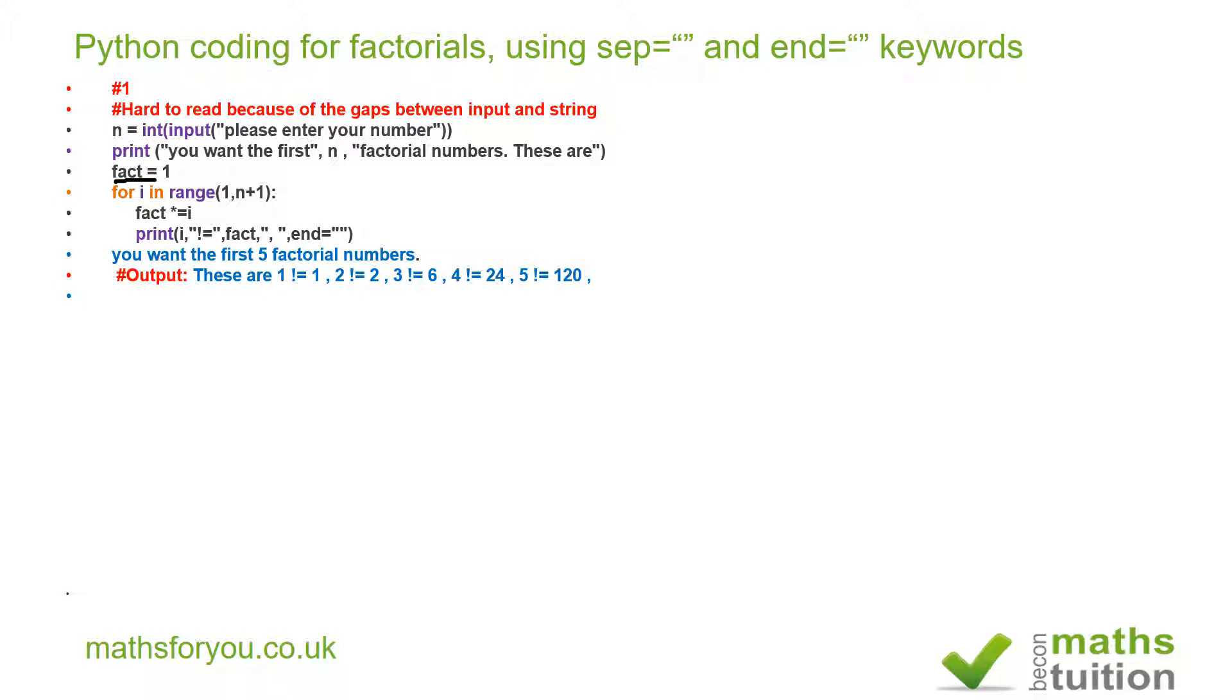Then it says for i in range one to n plus one. That n is five, so the range required will be one, two, three, four, five, and six. As usual, we do not use the last number, so in effect i has got to take values of one, two, three, four, and five.